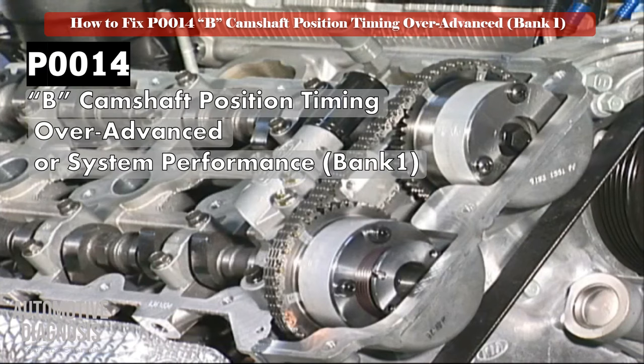PCM monitors the camshaft position when VVT is functioning. Normally when the engine is running at 2000-3000 RPM, PCM will activate the VVT by sending the activation command to the VVT solenoid, sometimes called the oil control valve or OCV. When OCV is activated but there is no change in camshaft position, PCM will set a fault code. P0014 fault code will be set if the difference between bank 1 exhaust camshaft's actual position and desired position is more than 20 degrees.